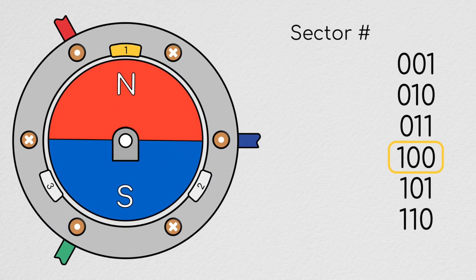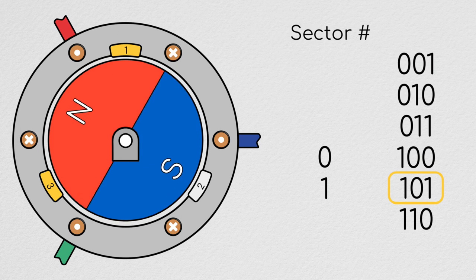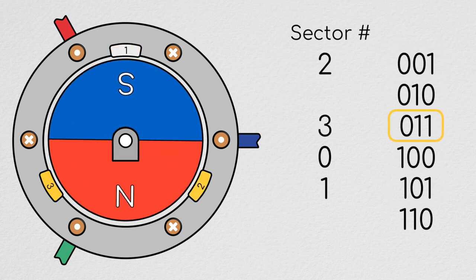Hi and welcome back to Understanding Motors. Last episode, we discussed how, using Hall effect sensors, we're able to detect which of six rotational sectors a brushless motor's rotor is in.